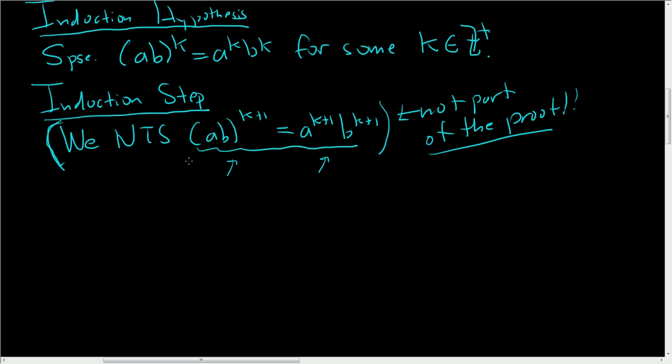All right, so to prove this, we'll start by writing this side down. Let's look at ab to the k plus 1. We have to show it's equal to this. Well, we can do this: ab to the k, times ab to the 1. And this right here, we know what this is, right? It's up here. And it's equal to this. So in this step, we use the induction hypothesis.